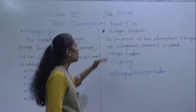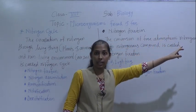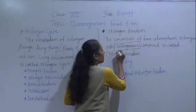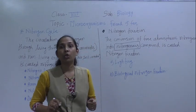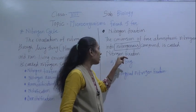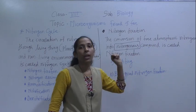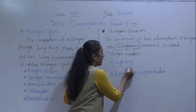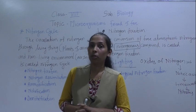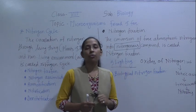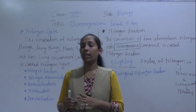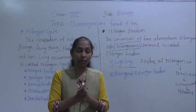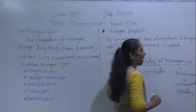The conversion of atmospheric nitrogen into nitrogenous substances or nitrogenous compounds is called nitrogen fixation. This nitrogen fixation happens by two ways. The first one is lightning. Whenever lightning strikes, the oxygen and the nitrogen react with each other and form oxides of nitrogen.